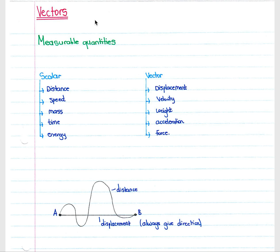A scalar quantity is a quantity that has magnitude but no direction, whereas a vector quantity is one which has magnitude and direction. Scalar quantities would be distance, speed, mass, time — anything that does not require a direction. For distance you would say four kilometers, and for mass you would say 45 kilograms, but you would not include a direction.